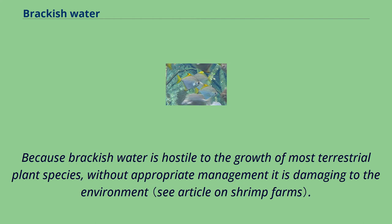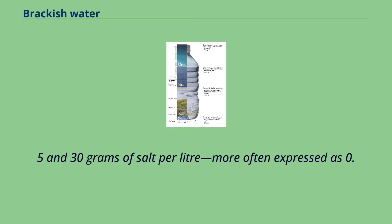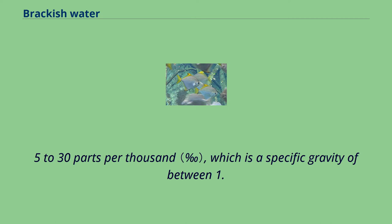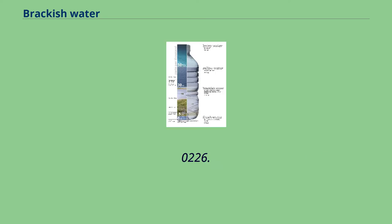Because brackish water is hostile to the growth of most terrestrial plant species, without appropriate management it is damaging to the environment. Technically, brackish water contains between 0.5 and 30 grams of salt per liter, more often expressed as 0.5 to 30 parts per thousand, which is a specific gravity of between 1.0004 and 1.0226.